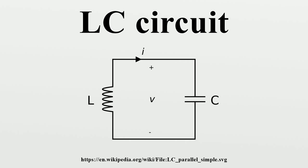An LC circuit, oscillating at its natural resonant frequency, can store electrical energy. A capacitor stores energy in the electric field between its plates, depending on the voltage across it, and an inductor stores energy in its magnetic field, depending on the current through it. If an inductor is connected across a charged capacitor, current will start to flow through the inductor, building up a magnetic field around it and reducing the voltage on the capacitor. Eventually all the charge on the capacitor will be gone and the voltage across it will reach zero. However, the current will continue, because inductors resist changes in current.